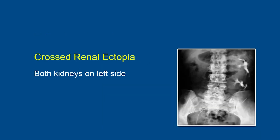This is a case of crossed renal ectopia in which both kidneys are seen on the left side and there is no shadow or contrast material in the right renal area. As you can see, the right ureter comes from the left side and then crosses over to go to the right side before going into the bladder.